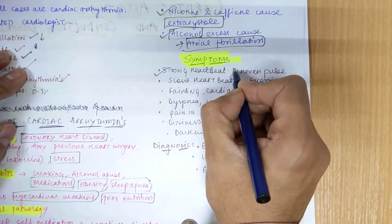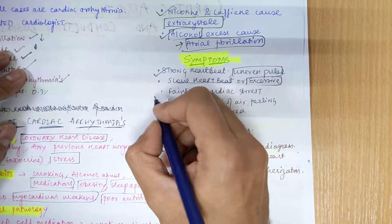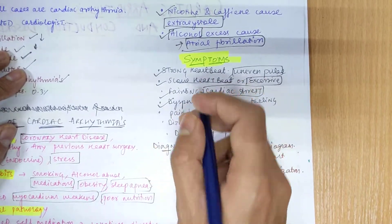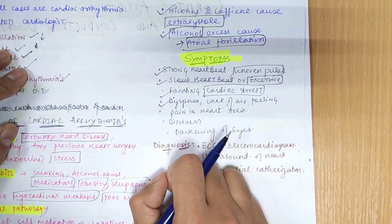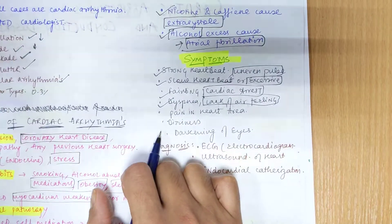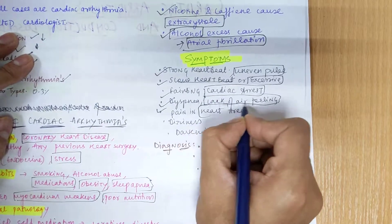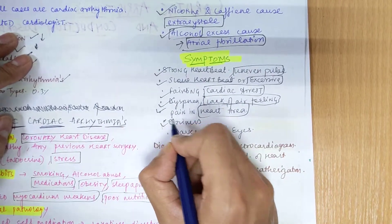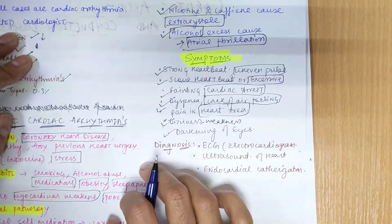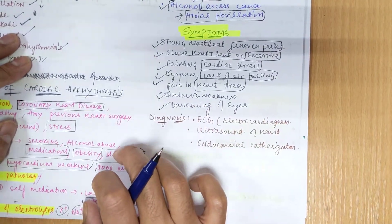The symptoms of cardiac arrhythmia include strong heartbeat or uneven pulses, slow or excessive heartbeat, fainting, and in severe cases cardiac arrest. The patient may experience dyspnea — shortness of breath and a feeling of lack of air. Other symptoms include pain in the heart area (angina), dizziness, weakness, fatigue, and darkening of the eyes.